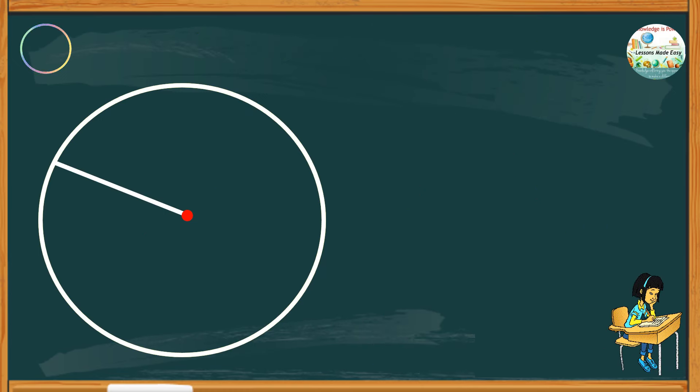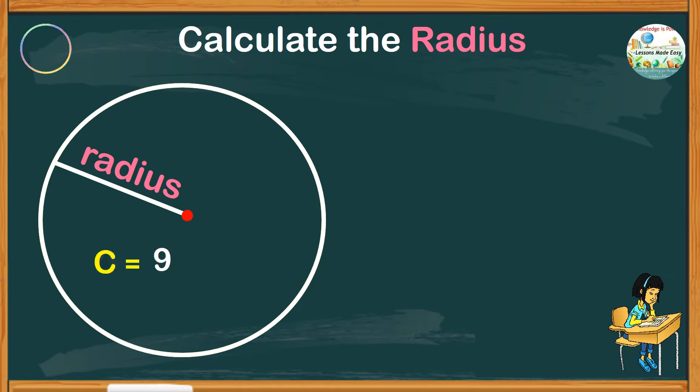Let's try another one. Calculate the radius of a circle with a circumference of 94.2 cm. In this problem, we can use the formula C equals 2 pi r and substitute the values.